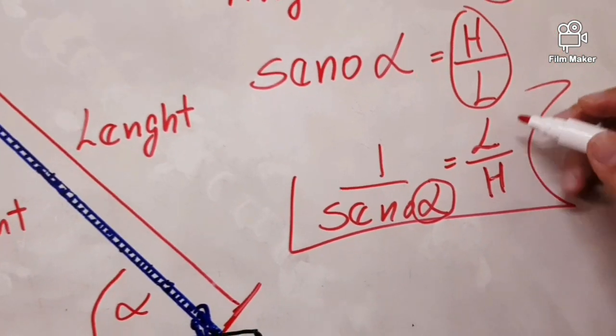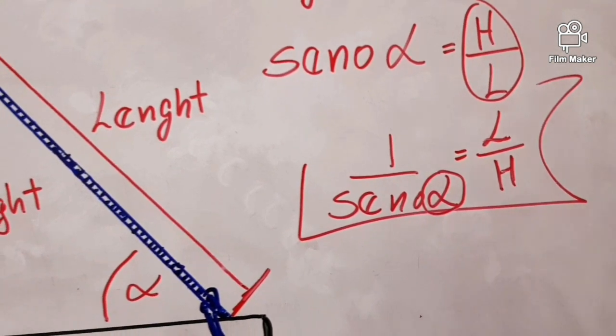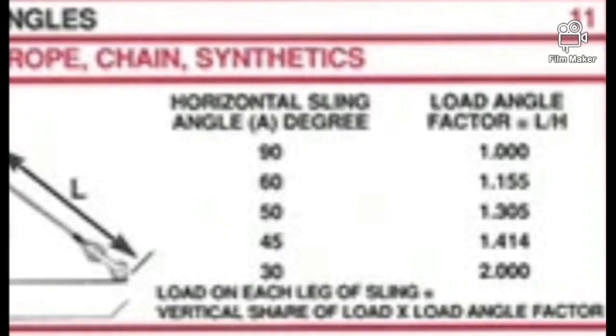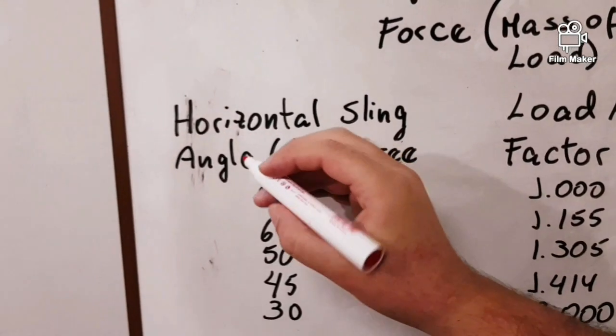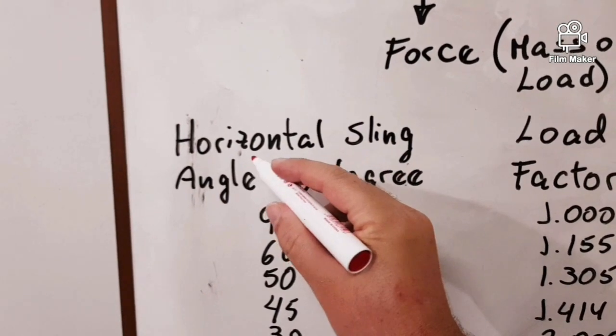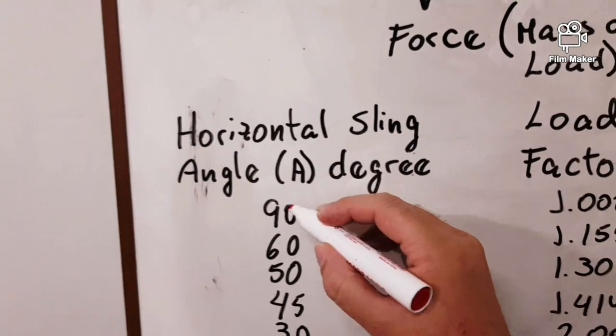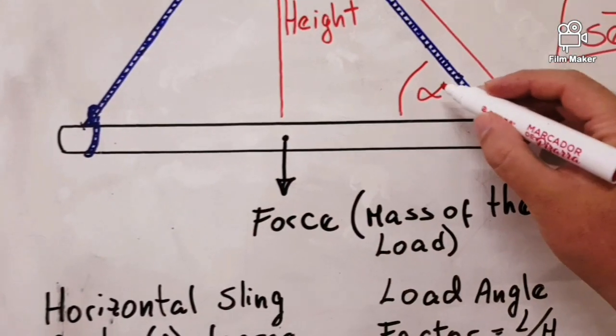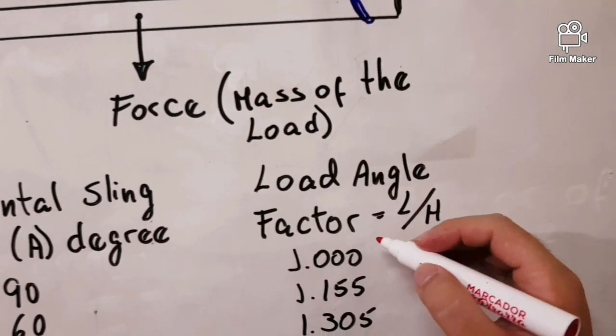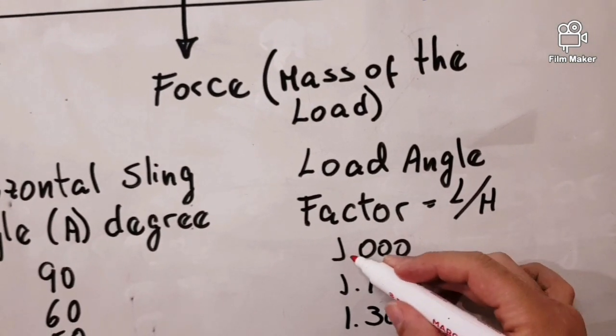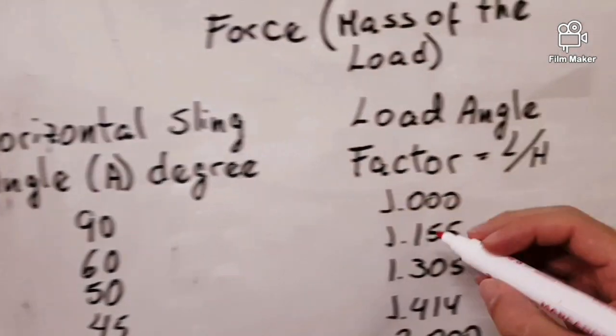Now we're gonna check if this expression is right. Let's check what Crosby says. Here, like Crosby says, if we have a horizontal sling angle in degrees of 90 or 90 degrees, this is the horizontal angle, we're gonna have a load angle factor of 1.